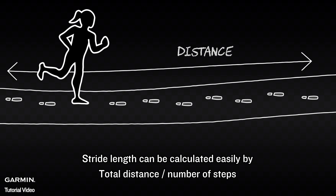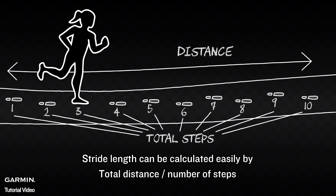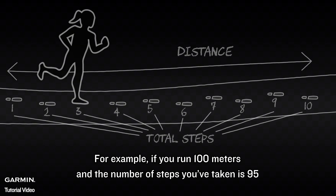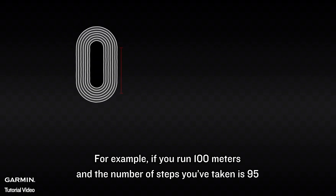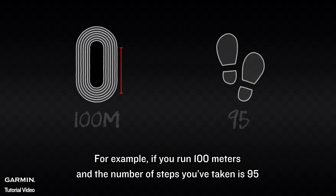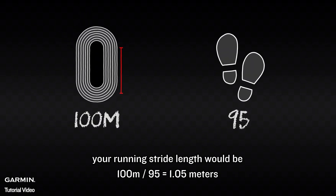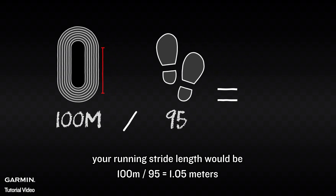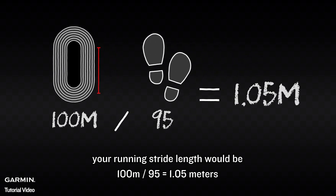Stride length can be calculated easily by total distance divided by number of steps. For example, if you run 100 meters and the number of steps taken is 95, your running stride length would be 100 meters divided by 95, which equals 1.05 meters.